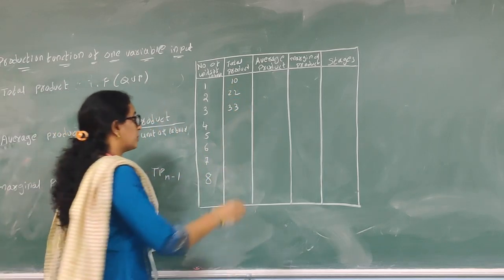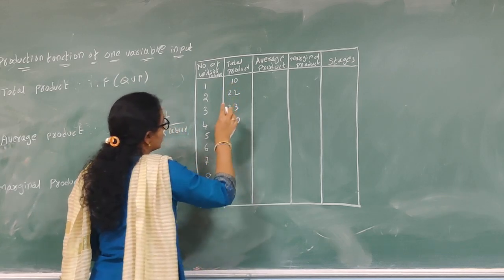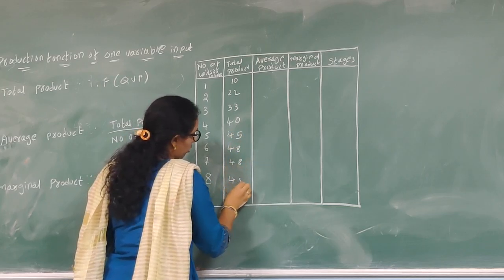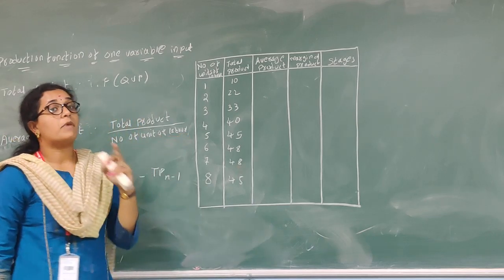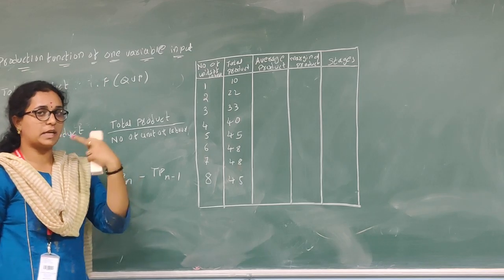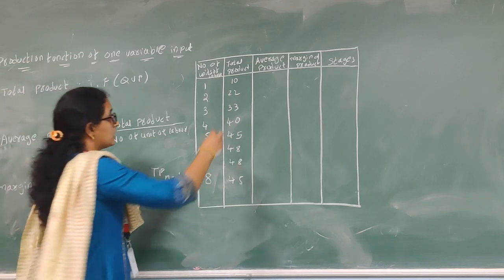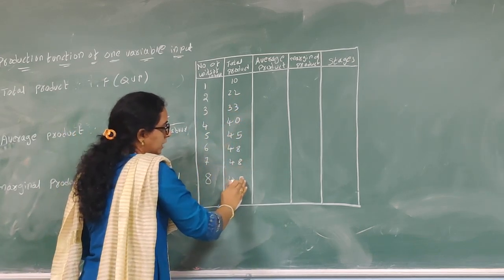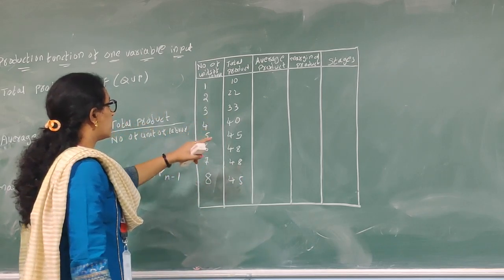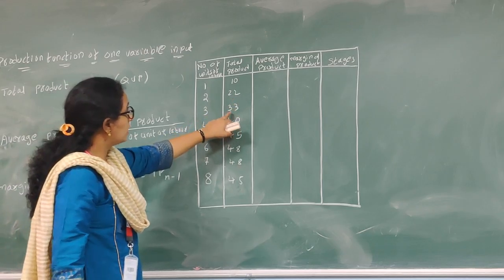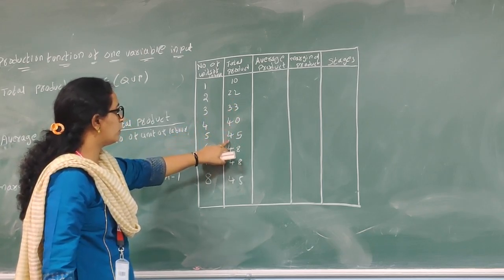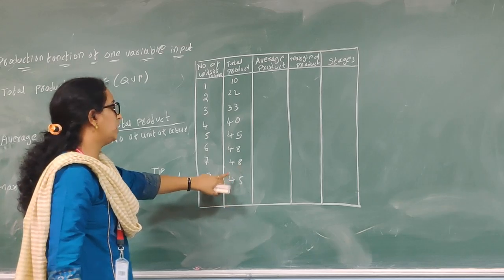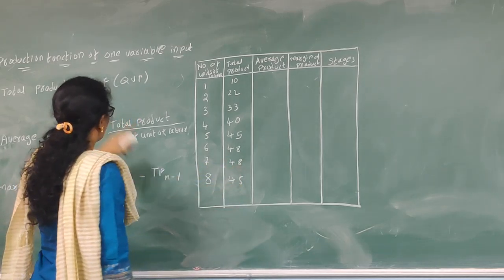The total product values assumed are: 10, 22, 33, 40, 45, 48, 48, 45. With one input fixed and remaining all variable, total production increases at an increasing rate in the early stages. From 10 to 22 is increasing, 22 to 33 increasing, 33 to 40 increasing, 40 to 45 increasing, then reaching 48 where it becomes constant — not increasing anymore. After that, a decreasing stage occurs, called the declining rate.